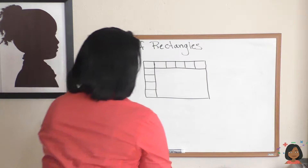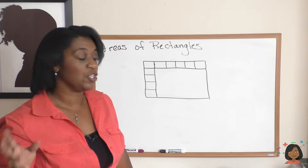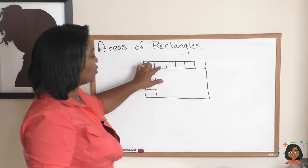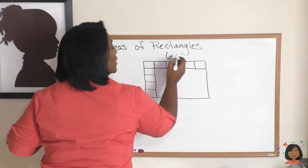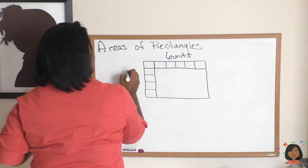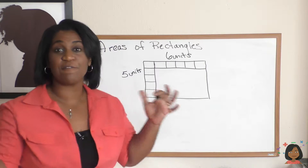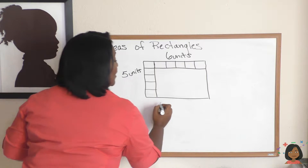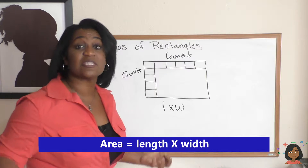Now how does that relate to math when they give you a problem? Back to the board — I have a rectangle here divided into some units. Let's count: one, two, three, four, five, six units across, and one, two, three, four, five units down. The formula for finding the area of a rectangle is length times width. My length is six units.